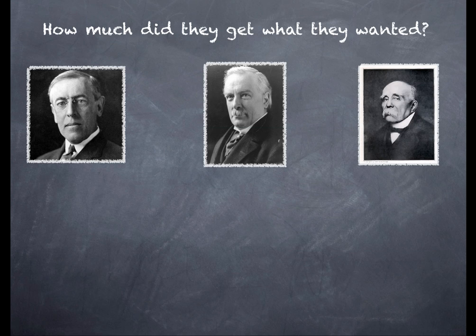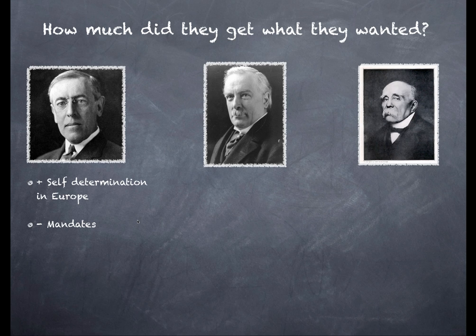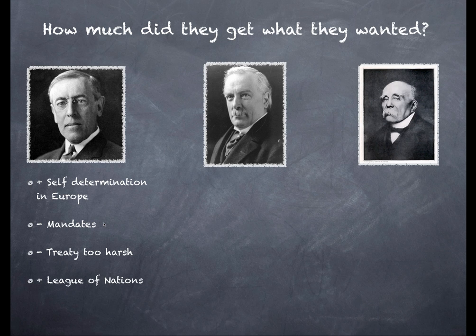So how much did each leader get what they wanted? Wilson did achieve some of his ideals. Self-determination in Europe: Poland regained its independence, as did Latvia, Lithuania, and Estonia. New countries out of the ruins of the Austro-Hungarian Empire received a degree of self-determination - Czechoslovakia and Yugoslavia, for example. In terms of colonies, not really a victory for Wilson; he would have liked them to have a more immediate chance of independence, but they were given as mandates to Britain and France. Wilson was worried the treaty was too harsh, but believed the League of Nations - the new international peacekeeping body - would be able to sort out any leftover problems.